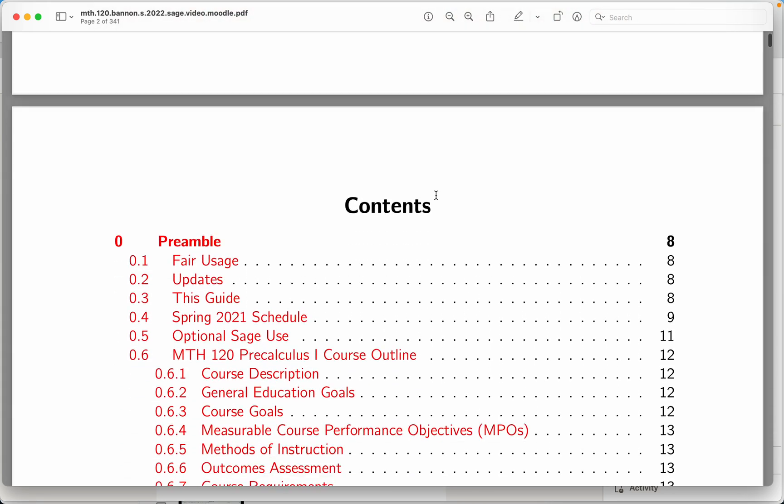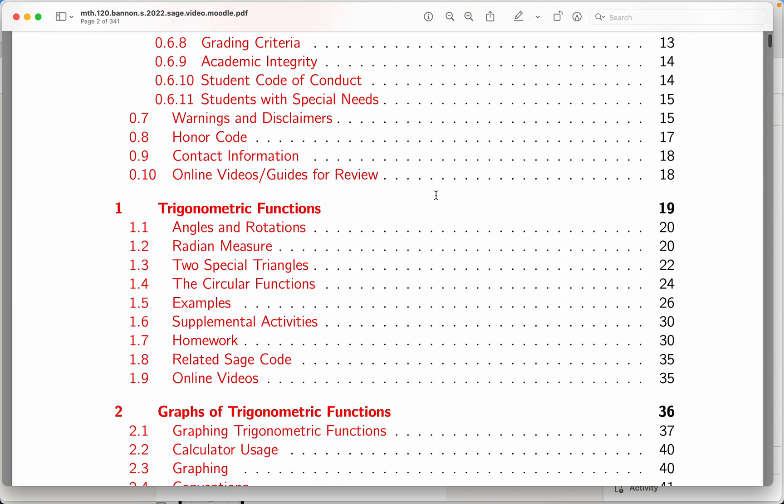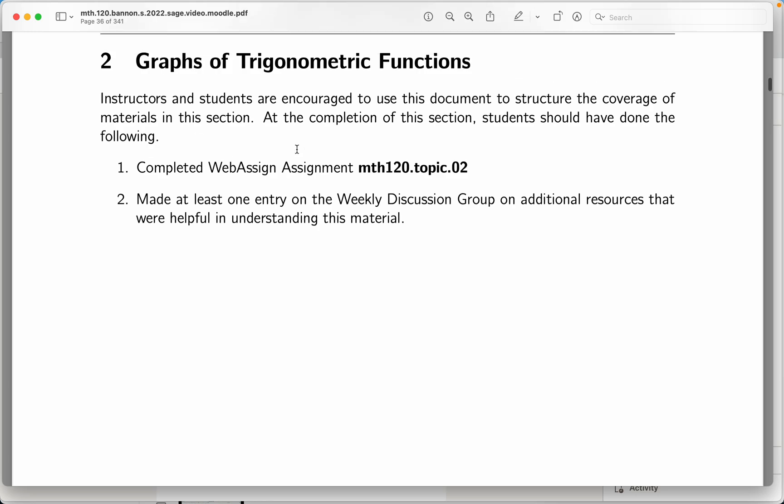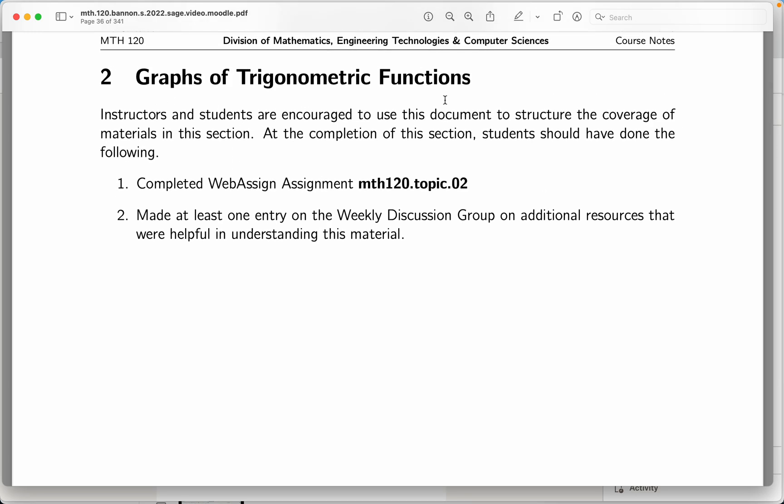So this is the Math 120 Guidebook. What I want to do is briefly go through one of the sections, but every section pretty much looks the same. It's the content that's different. For example, let's say I went to the graphs of trigonometric functions. I'm going to click on this and just go through this.